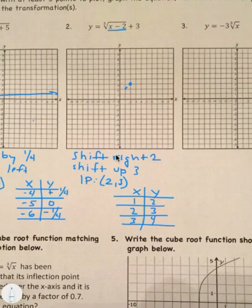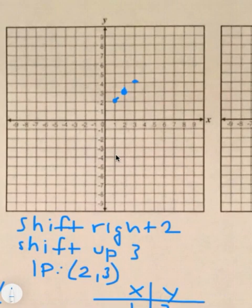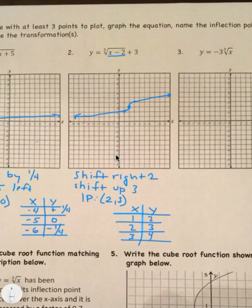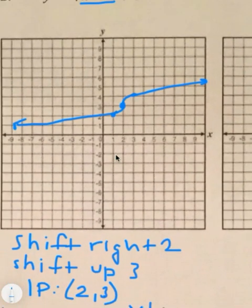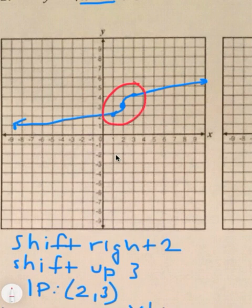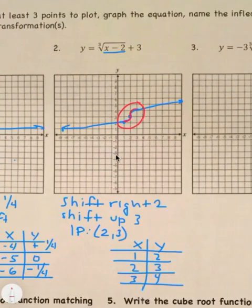So our points are (1, 2), (2, 3), and (3, 4). Don't draw this as a straight line — it has to have the cube root shape. It's going to go like this, and has that distinctive S-shape with a slight curve through the middle.